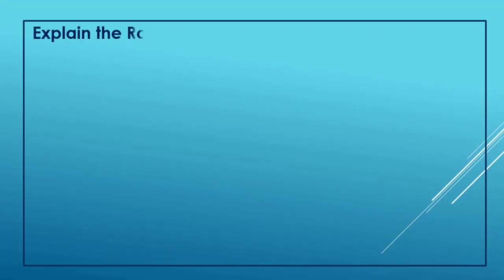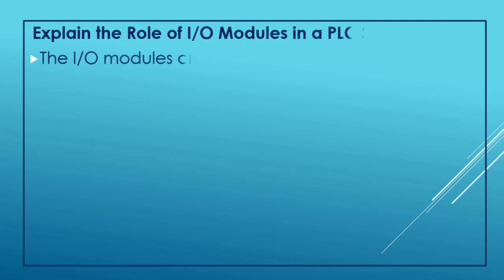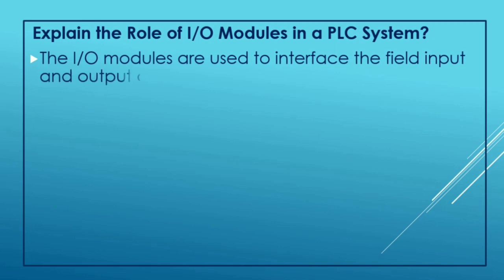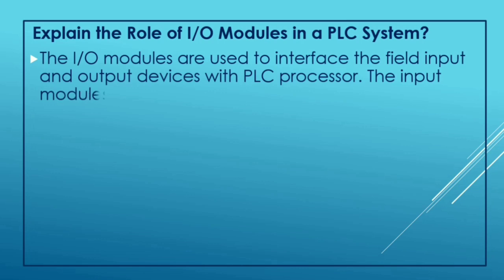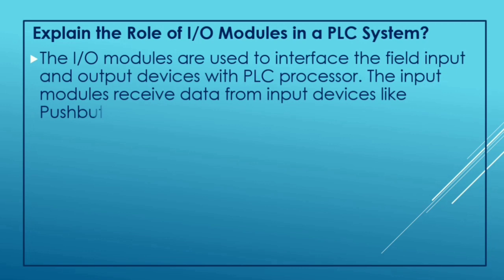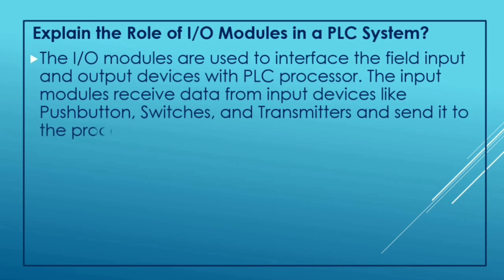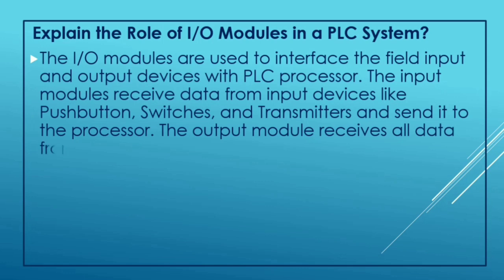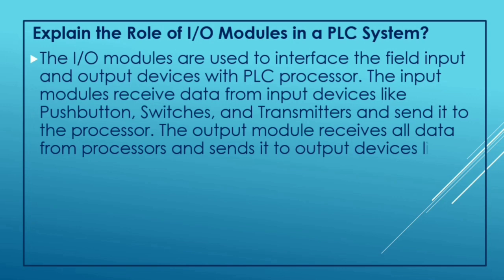Explain the role of I/O modules in the PLC system. The I/O modules are used to interface the field input and output devices with the PLC processor. The input modules receive data from input devices like push buttons, switches, and transmitters and send it to the processor. The output modules receive data from the processor and send it to output devices like relays, valves, etc.